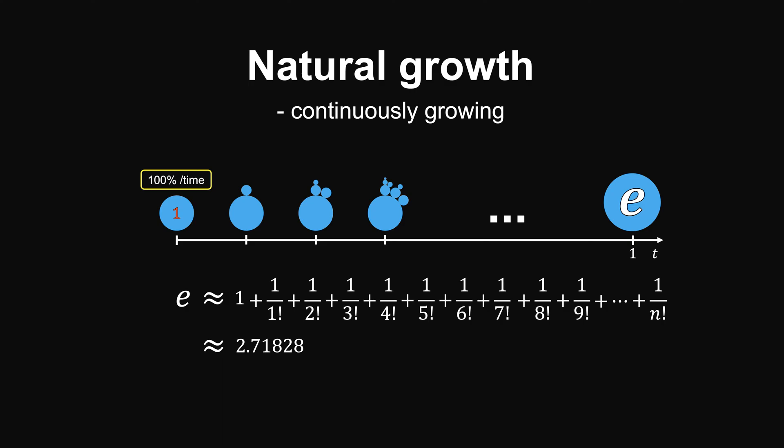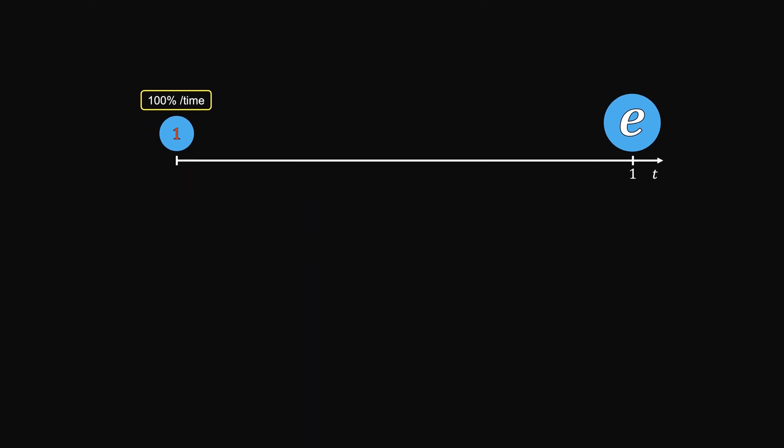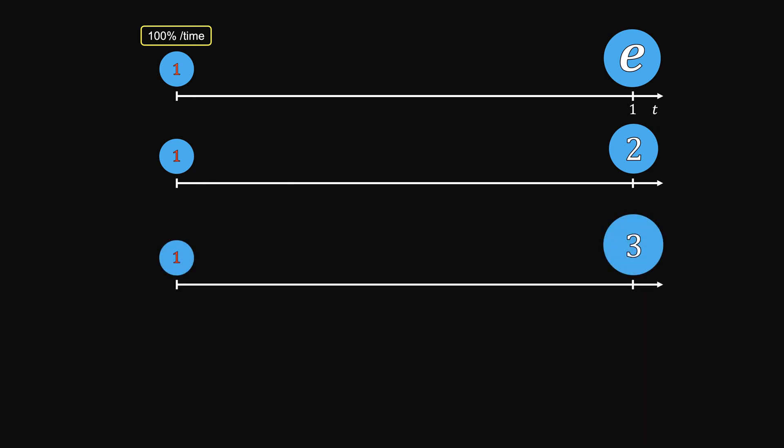In this video, the problem is turned around. Because in real life, you can never observe the growth rate directly. Instead, you observe the final outcome. For example, you might observe that one unit cell becomes two units in one unit time, or three units. In fact, it could be anything.